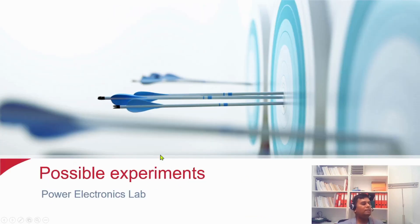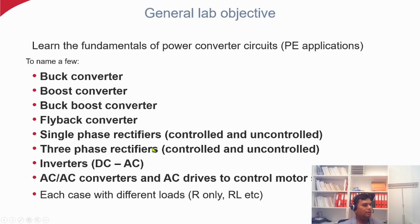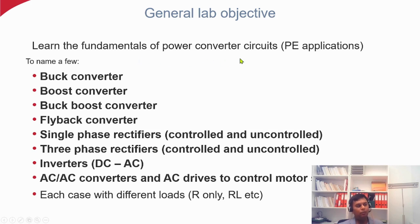Now we will see what experiments are possible in power electronics. The lab objective is to learn the fundamentals of power converter circuits. There are four major power converters: AC to DC, DC to AC, DC to DC, and AC to AC.